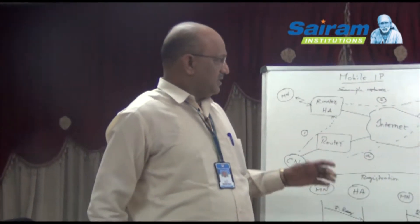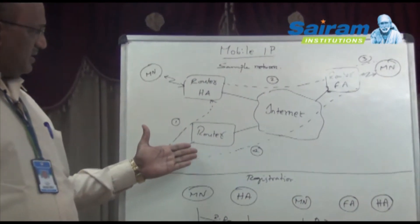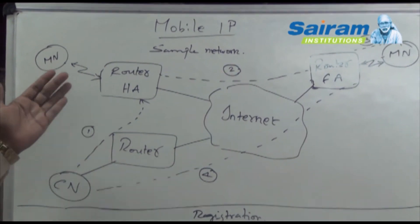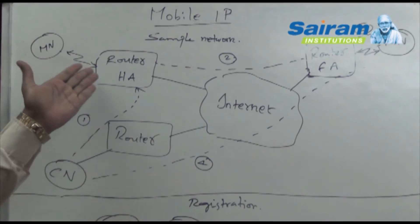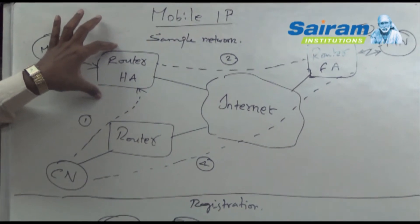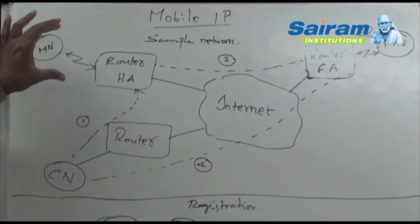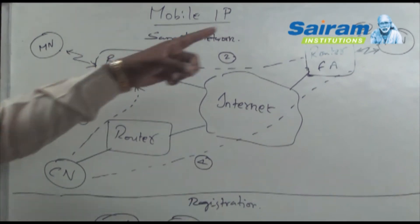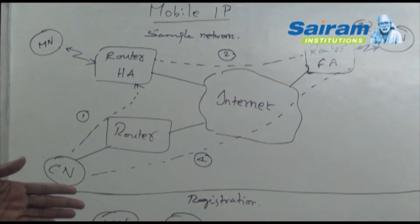A sample network is shown wherein we have a normal router connected with the internet, and on the other side, another router. Three routers are shown in this network. This is the mobile node (MN), and this is the correspondent node (CN), which is going to communicate with the mobile node. In a normal internet, the mobile node is attached with a home agent or home network router. The problem comes only when the mobile node moves from one point of attachment to the next — that is the problem of Mobile IP.